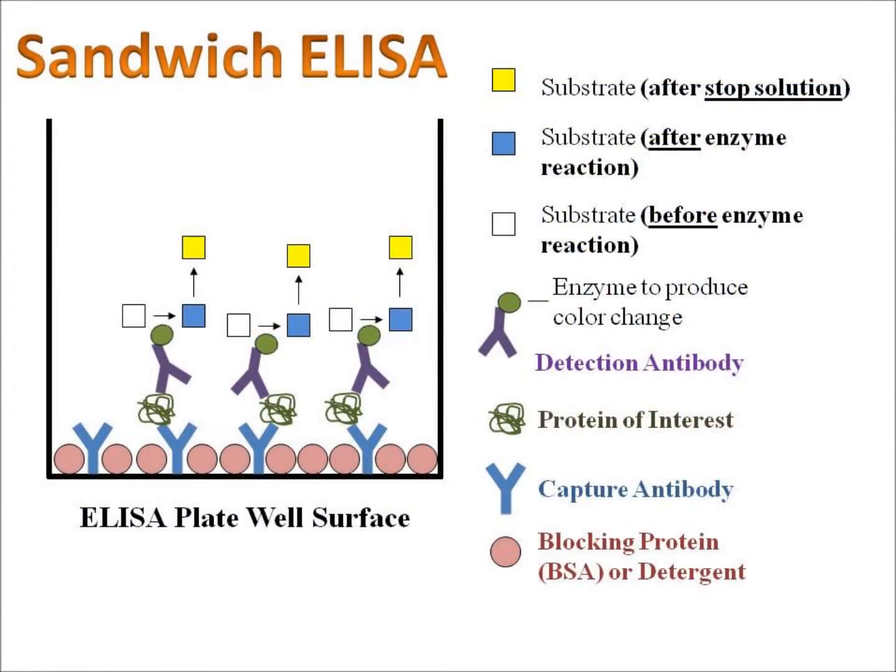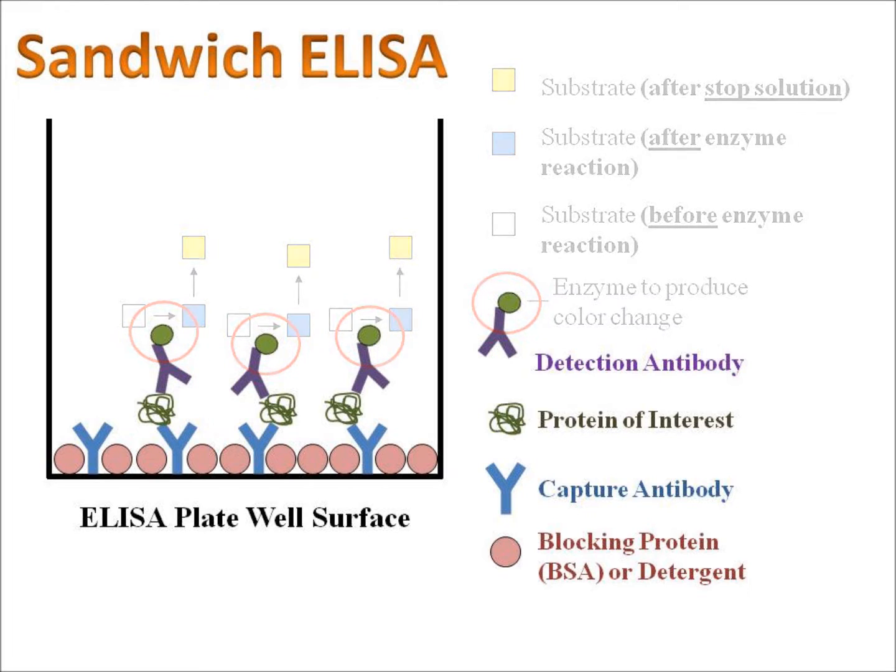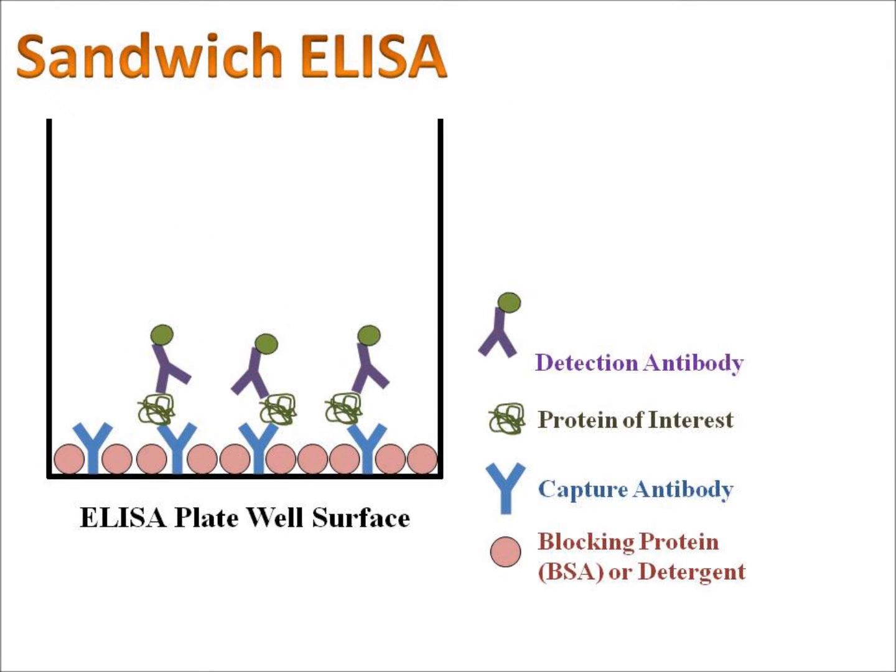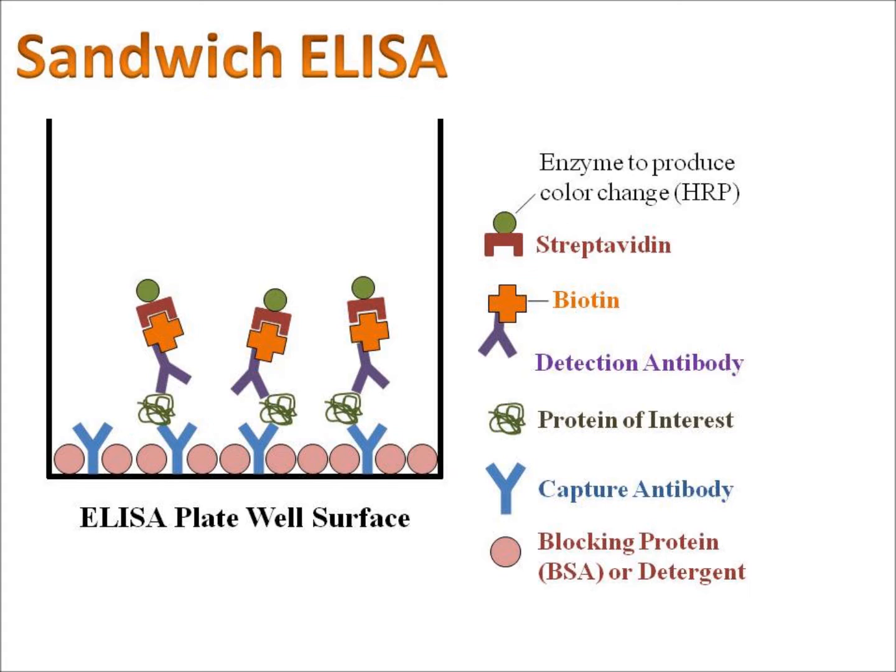Some ELISA protocols may not use strep HRP because the enzyme which produces a color change is already bound to the detection antibody. This kit works a little differently, however. Here, the detection antibody has a protein called biotin attached to it. Biotin binds very strongly with another protein called streptavidin, or strep for short. In this ELISA kit, strep is connected to HRP, which is the enzyme that produces a color change.